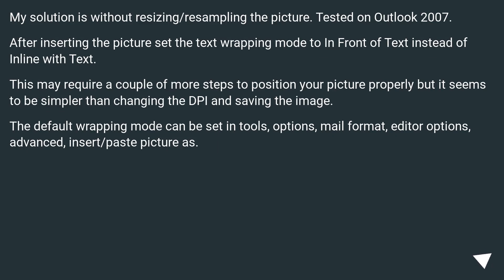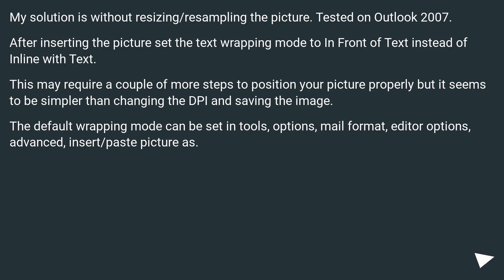My solution is without resizing or resampling the picture, tested on Outlook 2007. After inserting the picture, set the text wrapping mode to 'In Front of Text' instead of 'In Line with Text.' This may require a couple more steps to position your picture properly, but it seems simpler than changing the PPI and saving the image. The default wrapping mode can be set in Tools > Options > Mail Format > Editor Options > Advanced > Insert/Paste Picture As.